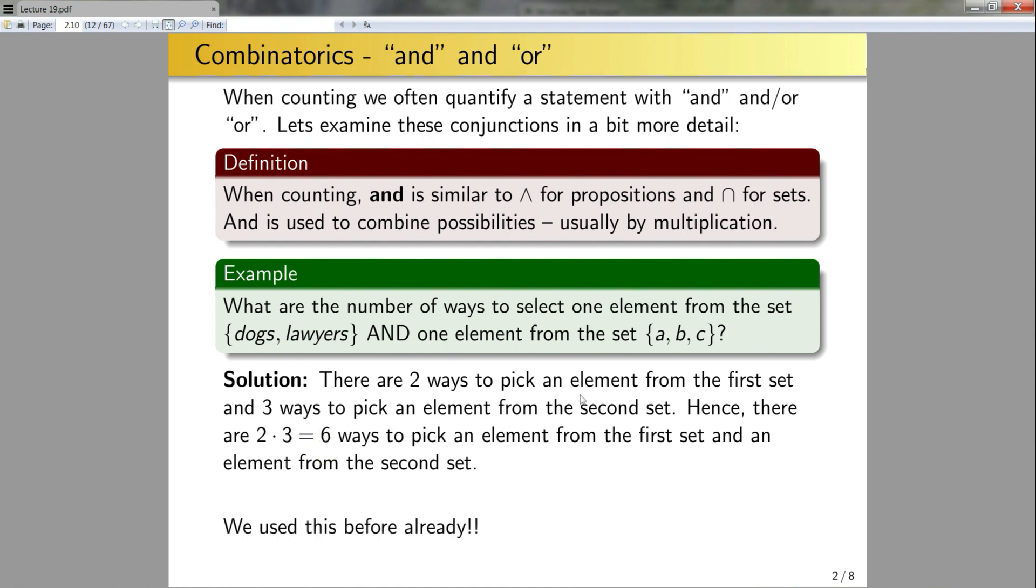We've seen this before. If I go back to example one, when I was rolling the dice, six-sided dice to build a four-digit number, I roll the first dice to build the first number, and then I roll the second dice to build the second number, and then I roll the third dice, etc. So we've seen this before. This is just quantifying it a bit more precisely. Now let's look at OR.